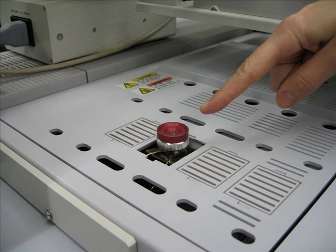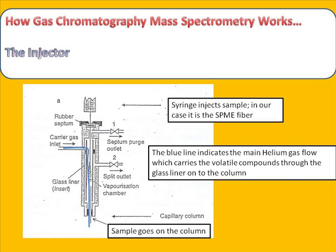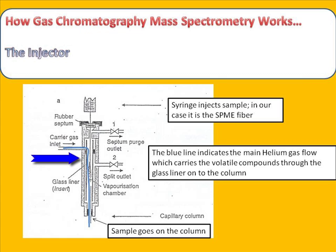Here you can actually see the top of the injector again. Here is a schematic of the entire injector port. The sample is evaporated into the hot glass liner, as you can see here, and is then carried with the helium gas, shown here with the blue line, onto the column.